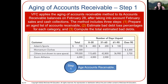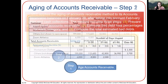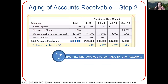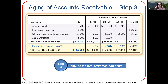First, we age the accounts receivable — how much is owed in zero to 30 days, though it could be a different timeframe, like zero to 60 days, depending on how the company plans its accounts receivable. Then we look at the total accounts receivable, estimate the bad debt loss percentage for each category, and multiply. So we expect of the zero to 30 days, 1,200 will go bad; of the 31 to 60, 4,500 will go bad.